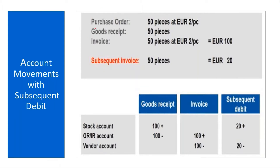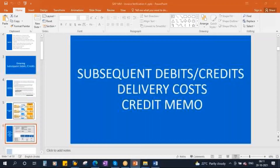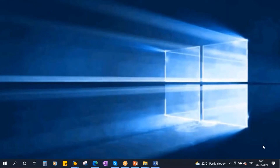So you have a purchase order, you received the entire quantity, and the invoice is also done. Later on, the vendor realized there was some issue — he charged you less, then he sends another invoice, let's say for 20 euro. In that case, this subsequent invoice you should post as a subsequent debit. Now we will see this in the system.